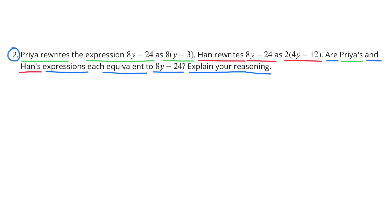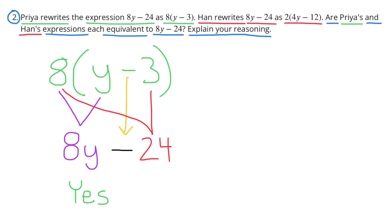Number 2: Priya rewrites the expression 8y minus 24 as 8 times (y minus 3). Let's check: 8 times y is 8y, bring down the subtraction sign, and 8 times 3 is 24. So 8y minus 24 is equivalent to 8 times (y minus 3). Yes, Priya is correct.